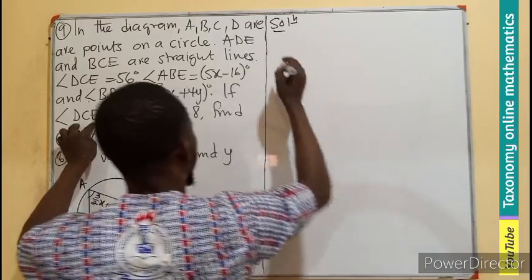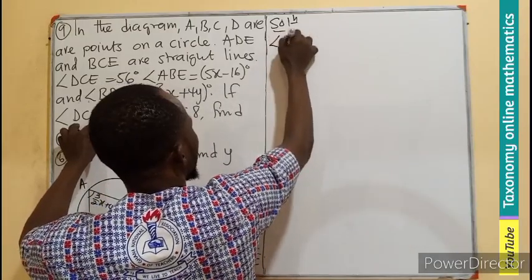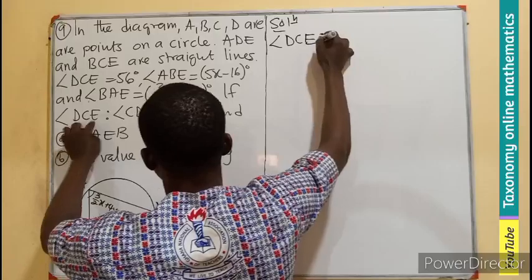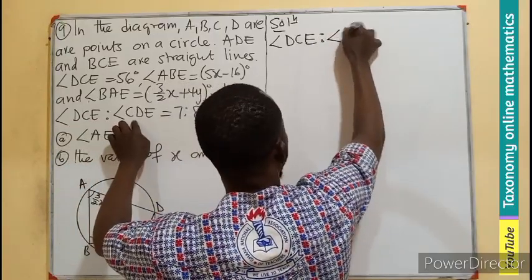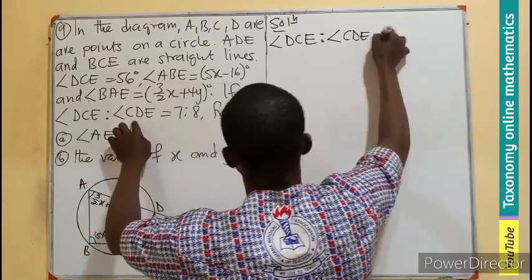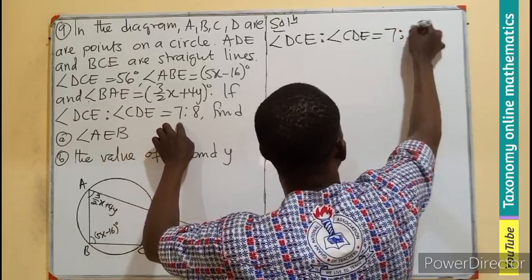So since we are having this angle DCE, the ratio of that with the angle CDE is given to us as 7 is to 8.